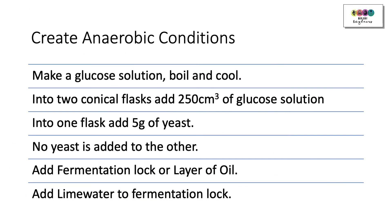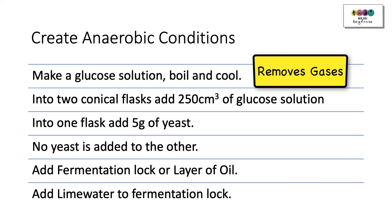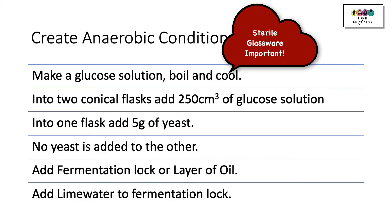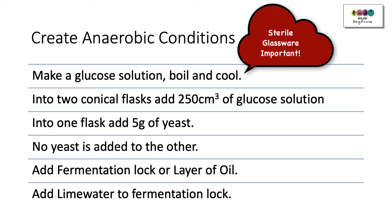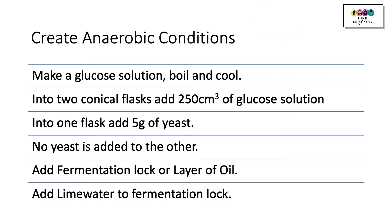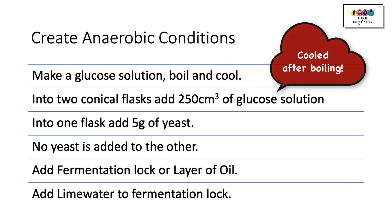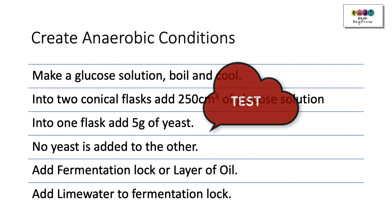The key to this practical is creating anaerobic conditions. Firstly, make your glucose solution, boil it, then cool it. Boiling drives out any gases, and it's important to let it cool because if you don't you will kill the yeast. Boiling also removes contaminants — any microorganisms that could contaminate your practical. Then place 250 cm³ of the cooled, boiled glucose solution into two conical flasks, and into one flask add five grams of yeast.